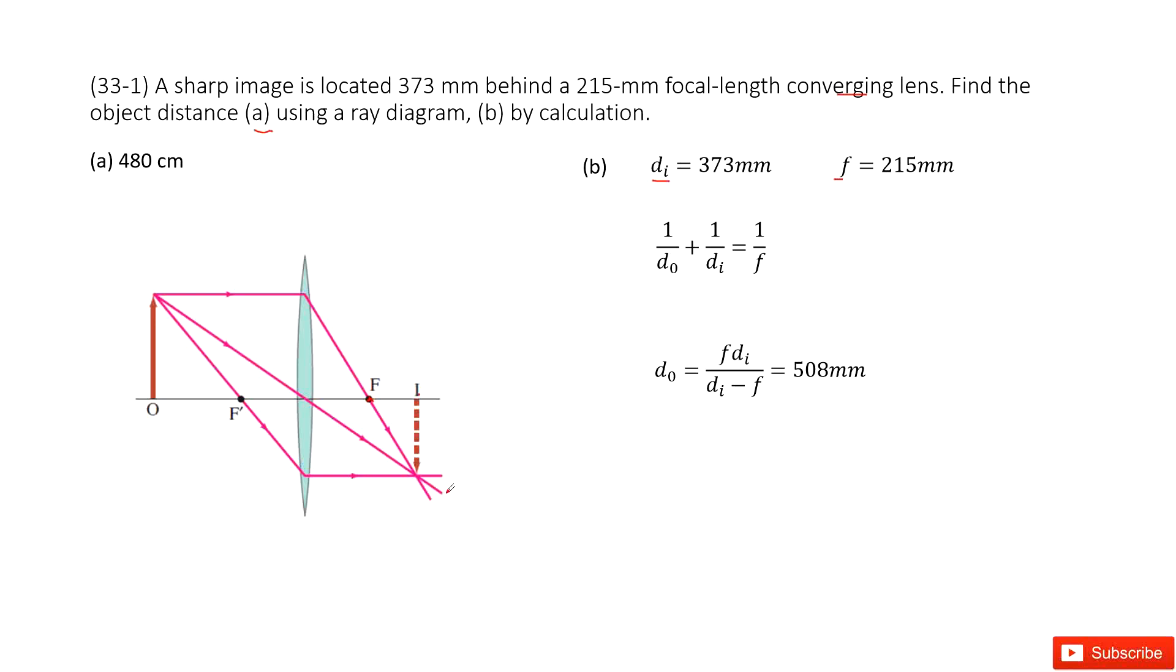if this line goes through the top of the image and goes through the center of the converging lens, it will not change, right? The angle will not change. It goes this way. The point where these two lines cross over, this point is the top of the object.